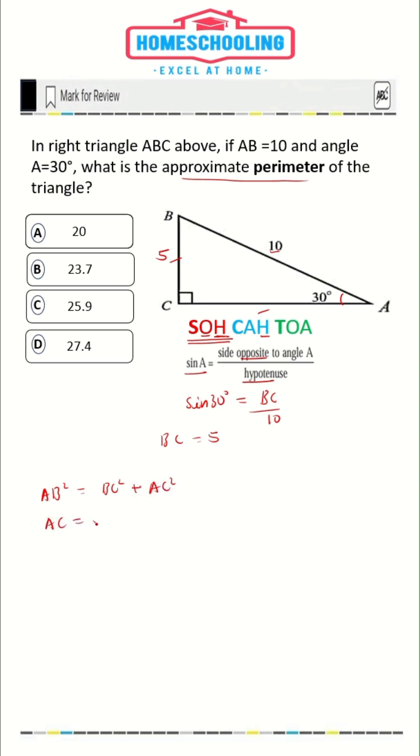From this, we can say AC is equal to the square root of AB squared minus BC squared. AB is 10, so the square of 10 would be 100. BC is 5, so the square of 5 would be 25. This would be the square root of 75, and the square root of 75 is 8.7. So AC is 8.7.